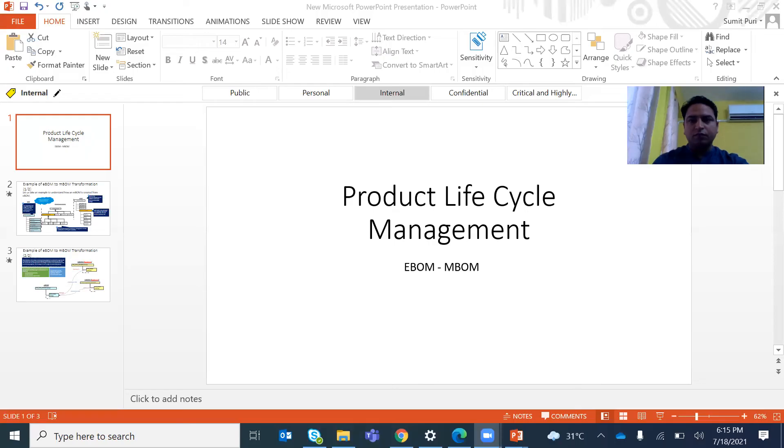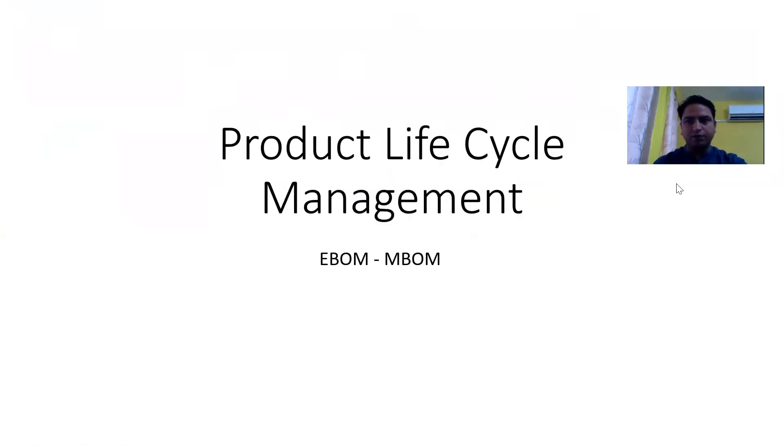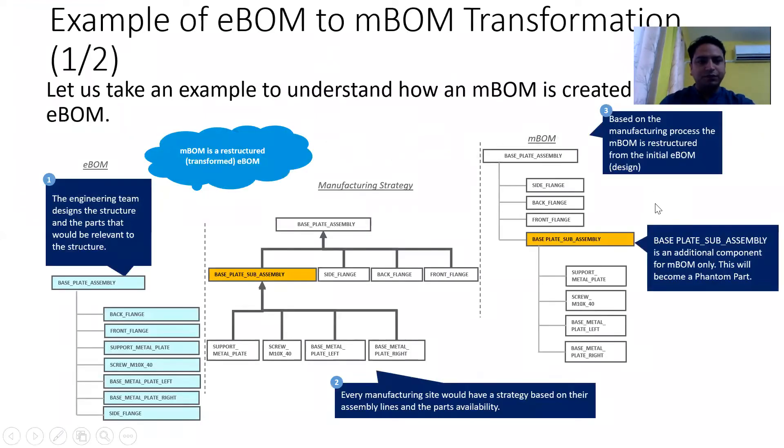For example, suppose there is an America design center and multiple manufacturing sites — India, China, Brazil, Africa, South Africa, Kenya — then different manufacturing bills of materials are needed. I want to share a presentation on screen showing an example of how we transform eBOM to mBOM.